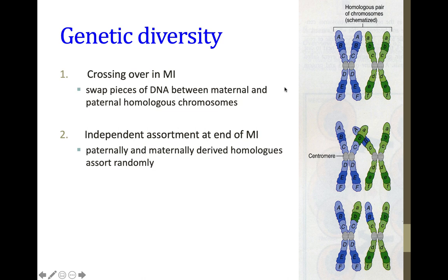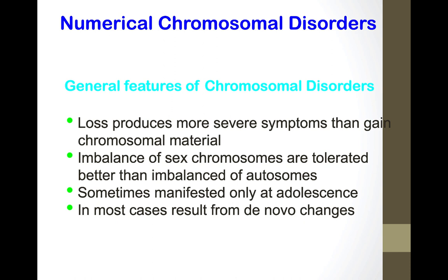Genetic diversity: crossing over in meiosis 1 swaps pieces of DNA. These are also in the supplementary material. Regarding somatic chromosomal abnormalities — general features of numerical chromosomal disorders: loss of a chromosome or part of a chromosome produces more severe symptoms than a gain. Imbalance of sex chromosomes is better tolerated than imbalanced autosomes. Some cases manifest only at adolescence, and most result from de novo changes or mutations in the gametes.